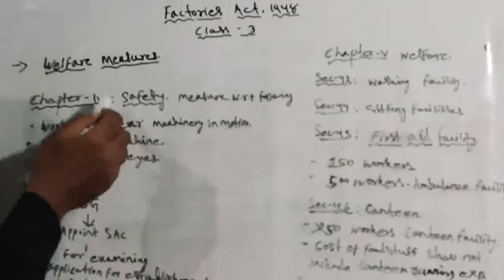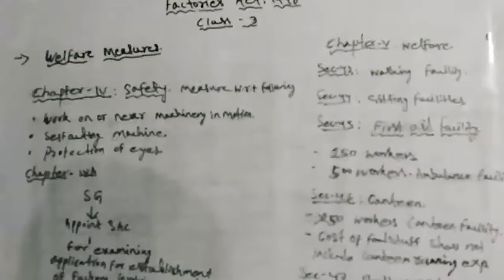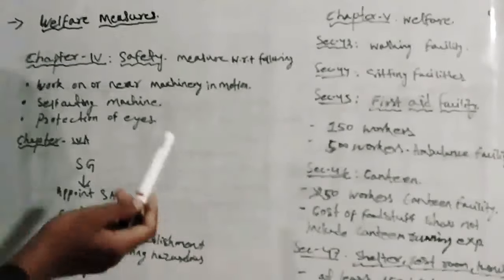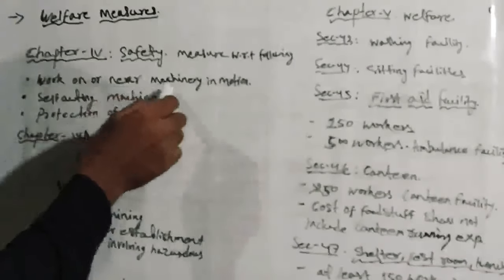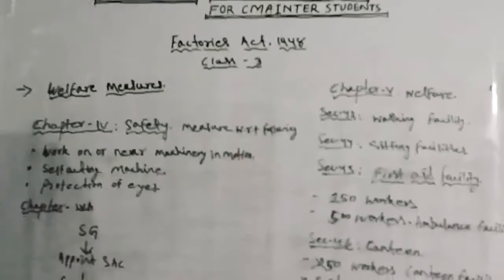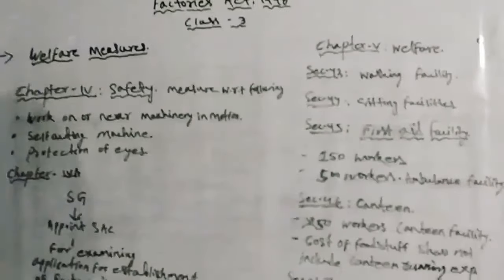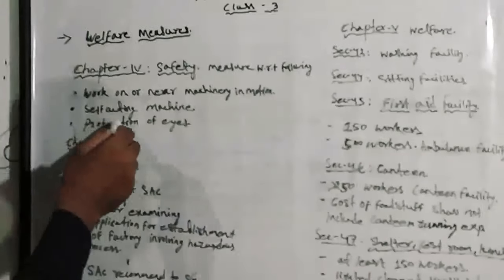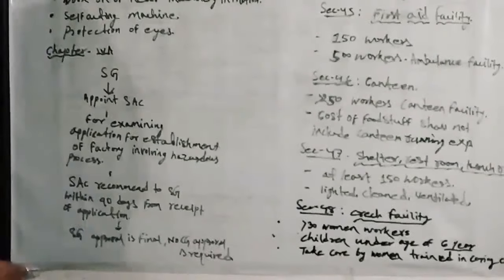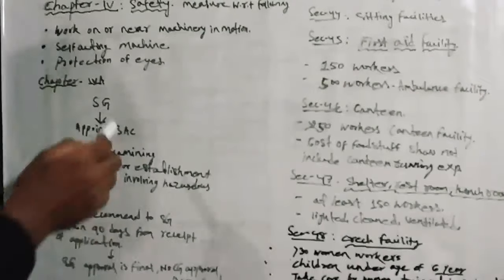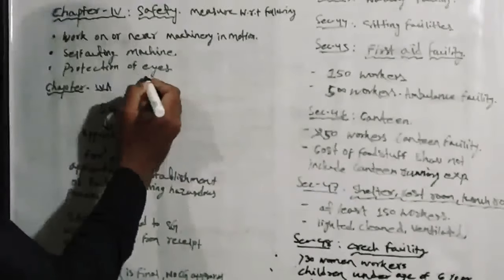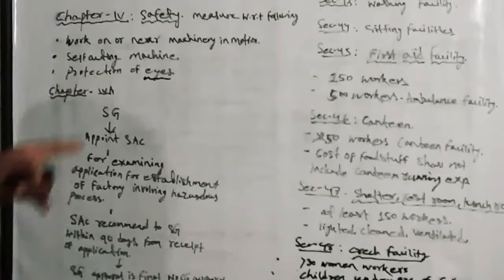Students, under Welfare Measures, Chapter IV comes next: Safety. Safety measures with respect to the following — working on or near machinery in motion; the machine needs to be properly guarded. Self-acting machines need to be required. Then, protection of the eye — medical measures must be taken for safety. Those are the safety measures.